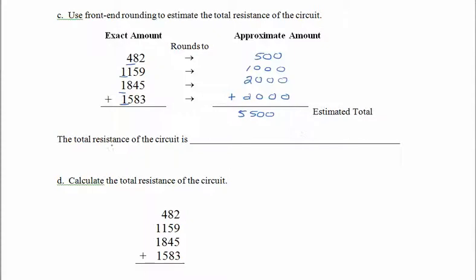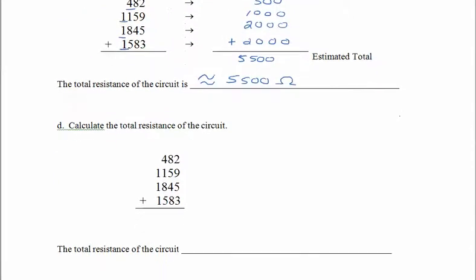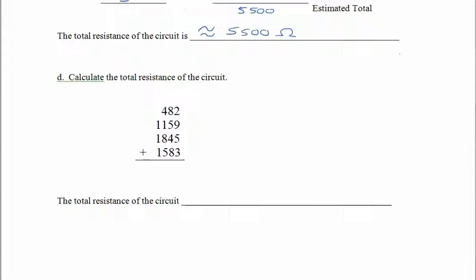So the total resistance of the circuit is approximately, and you remember these two little squigglies mean approximately, 5500 ohms. Now all of our approximations were roughly in the same area. It's really a question of the situation that determines which type of rounding we might want to use. We should probably compare this with the actual. So let's come down here and calculate the total resistance of the circuit.